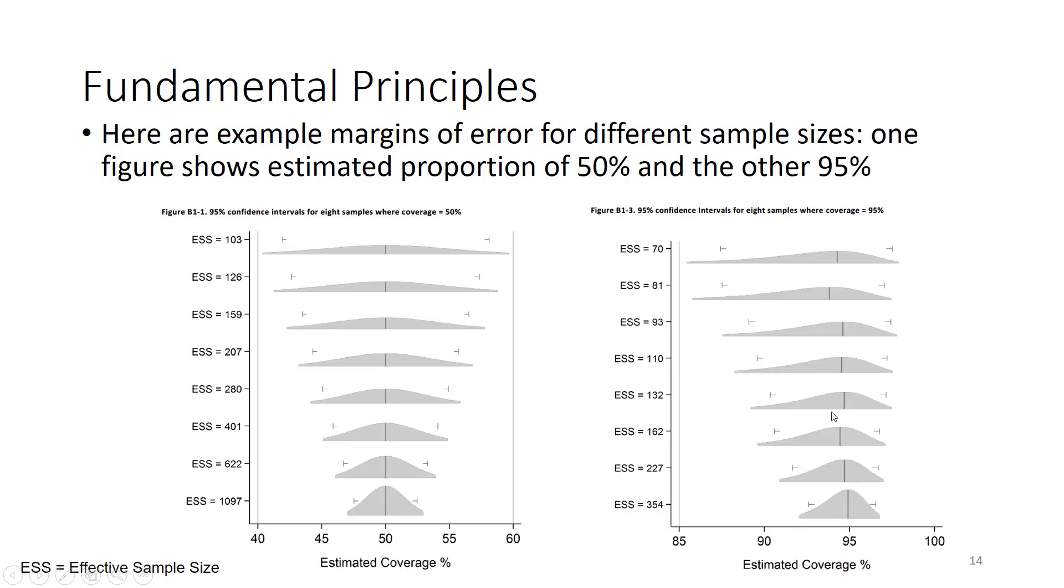The same point is illustrated here. If it were 95% instead of 50%, these confidence intervals are not symmetrical, they're asymmetric, but the principle is the same. That as the sample size gets bigger, then the estimates get more precise.